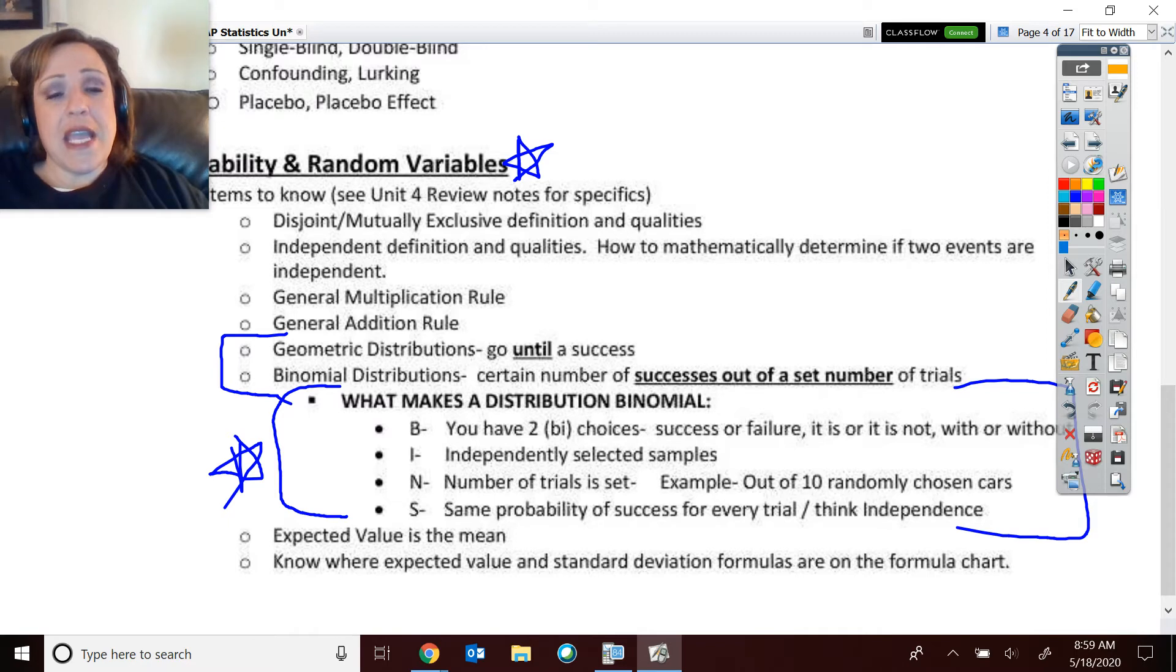But it asked, and I have seen this happen before, and so I didn't want to neglect giving you this information. What actually is making something considered to be a binomial distribution, because we talk about it when we first introduce it, but I haven't really stressed it, is that you have binomial, you have those two choices. You either have a situation where it's a failure or a success. It is or it isn't. You stop at the stop sign, you don't stop at the stop sign. And then, of course, your independence of selection of those samples, your number of trials is set. So, out of 10 randomly chosen cars. And then the same probability of success for every trial. One's not, the probability of one isn't affecting the probability of the other if they're wearing their seatbelt or not.